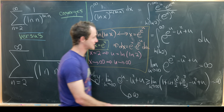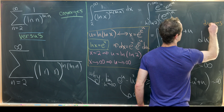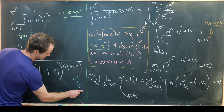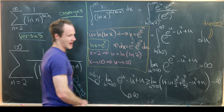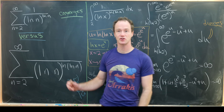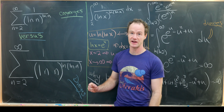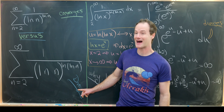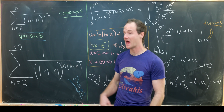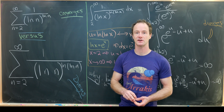So this integral diverges, meaning the second series diverges. We've found a tipping point: one over natural log to the natural log converges, but one over natural log to the natural log of the natural log diverges. This extra evaluation of natural log in the exponent tips us from convergent to divergent.